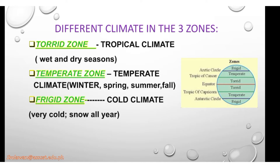For the different climates, we have three zones, which have already been discussed in previous topics: the torrid zone, the temperate zone, and the frigid zone. In the torrid zone, we have tropical climate with wet and dry seasons. In the temperate zone, we have winter, spring, summer, and fall — which is not in the Philippines. In the frigid zone, it is very cold or snow all year, from the Antarctic region or the North Pole.